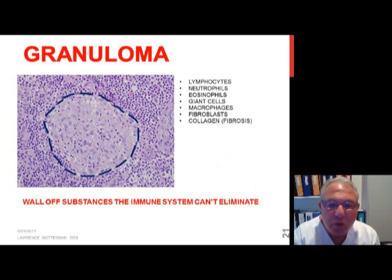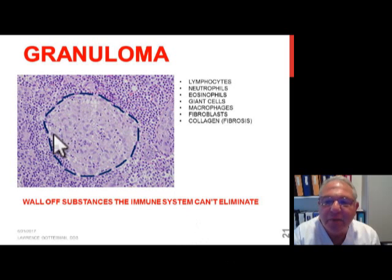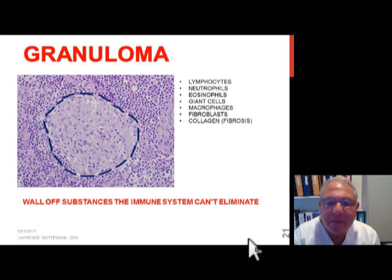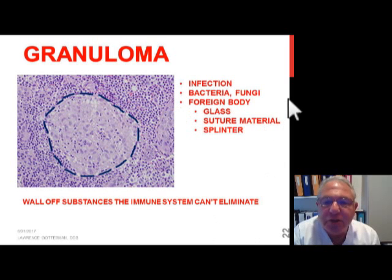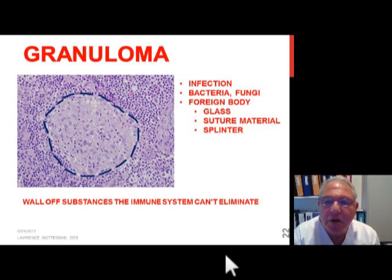As a granulomatous disorder, I'd like to describe what a granuloma is. A granuloma is the body's attempt to wall off an infection or a foreign body by surrounding it with different cell types and fibrous tissue. You can see the granuloma depicted here with the dark blue dashed lines around it. In most cases what I'm looking for is an infection caused by something like bacteria or fungus, however it also occurs with a glass splinter or even suture material left behind.